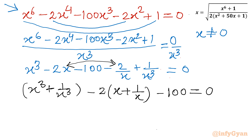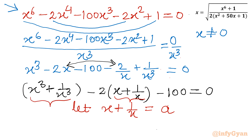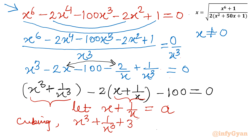The obvious substitution is to let a = x + 1/x. We also need x³ + 1/x³, so let us cube both sides of a = x + 1/x. Using the identity (A+B)³ = A³ + B³ + 3AB(A+B), and noting that x · (1/x) = 1, we get: x³ + 1/x³ = a³ - 3a.